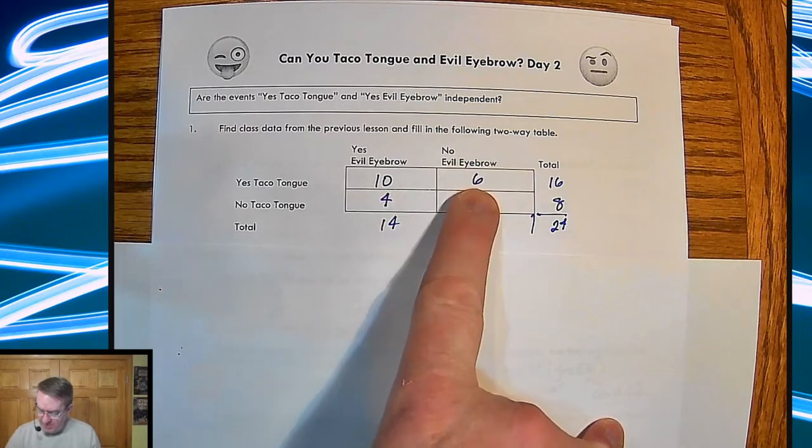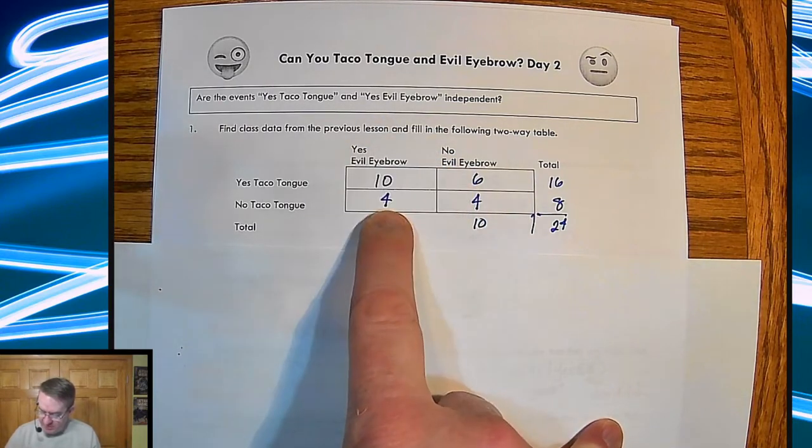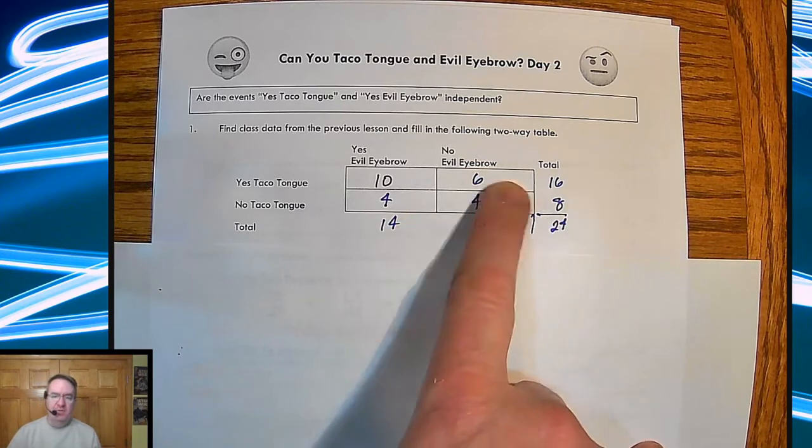I have 10 people who can do both, six people who can only do taco tongue, four people who can only do evil eyebrow, four people who can't do anything. And the totals are there.